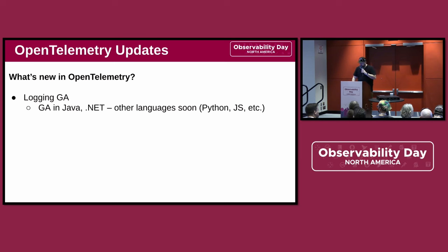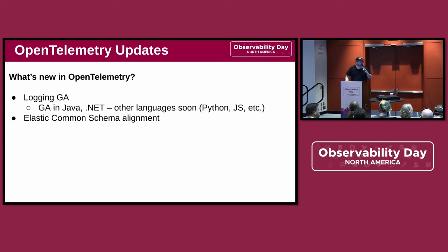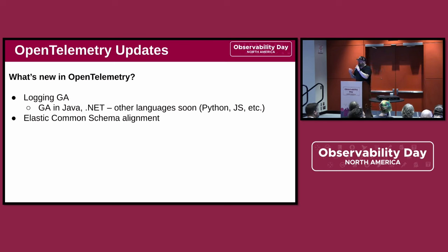With logging being done, that is all three things — metrics, tracing, and logging. How exciting. Earlier this year, we announced that we are aligning our semantic conventions with the Elastic Common Schema to further reduce the number of standards and to further establish OpenTelemetry as the single best way to express observability telemetry.